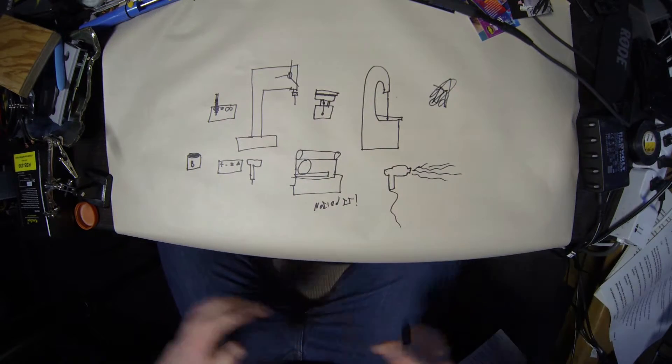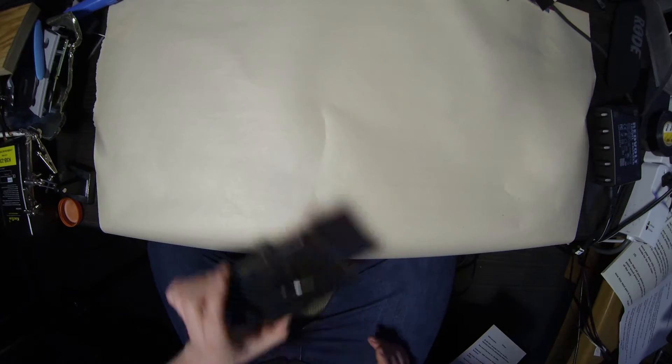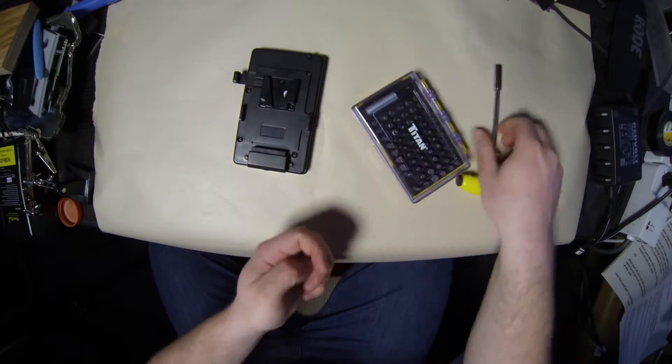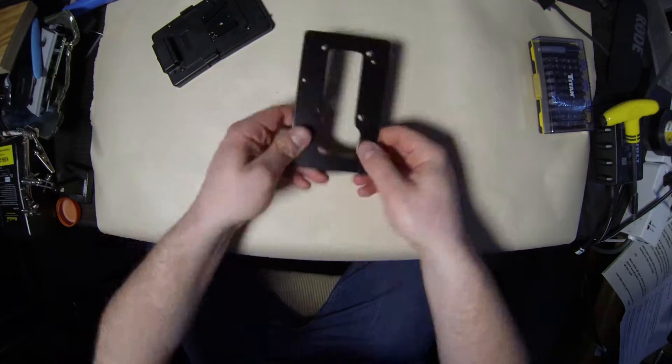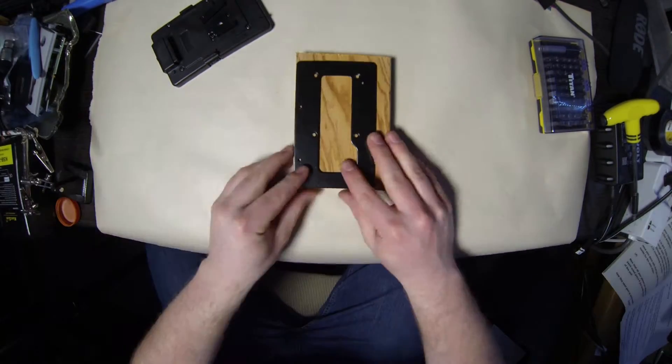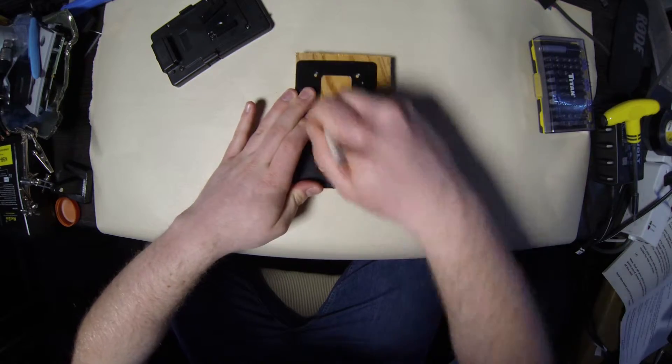Great, now that we have everything together, let's get started. The first step is to remove the back plate from the battery plate and trace the plate on the wood. This is where you decide which way you'd like the power cable to come out of the unit. Once that's all done, we can head out to the workshop.